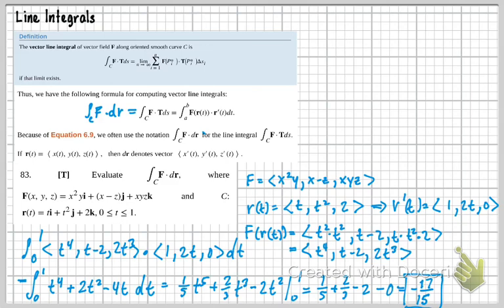But what does that tell us? That simply tells us that the vector field is hurting us more than it's helping us as I travel along my path.